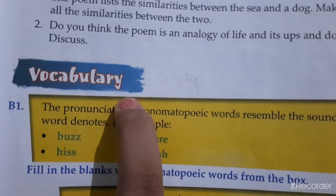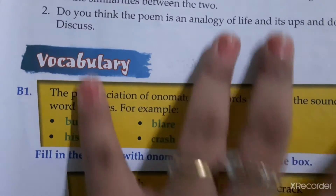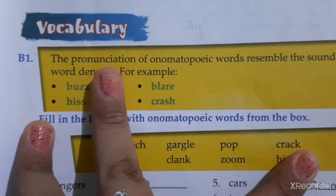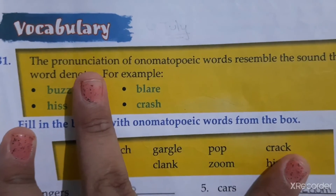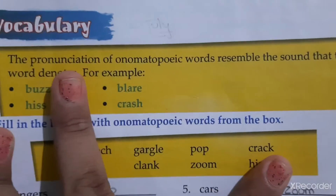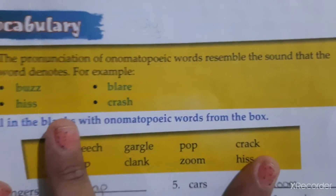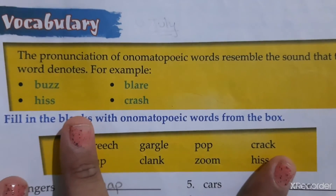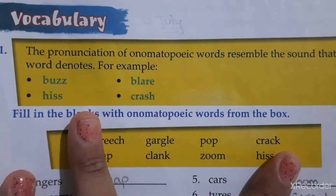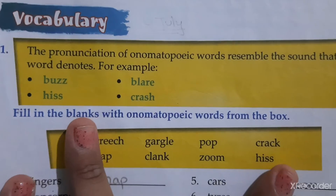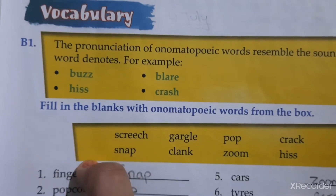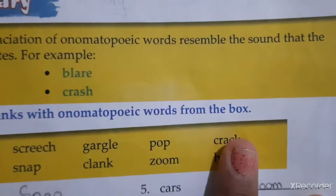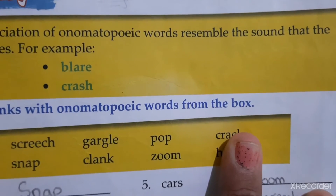Now let's talk about vocabulary. The pronunciation of onomatopoeic words resembles the sound that the words denote. For example: buzz, splash, hiss, and crash. The exercise is to fill in the blanks with the onomatopoeic words from the box.